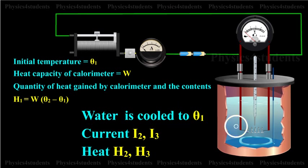The experiment is repeated by passing the currents I2, I3, etc. through the same coil for the same interval of time T and the corresponding quantities of heat H2, H3, etc. are calculated.